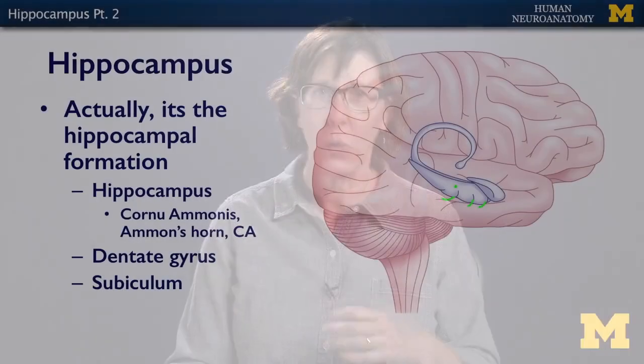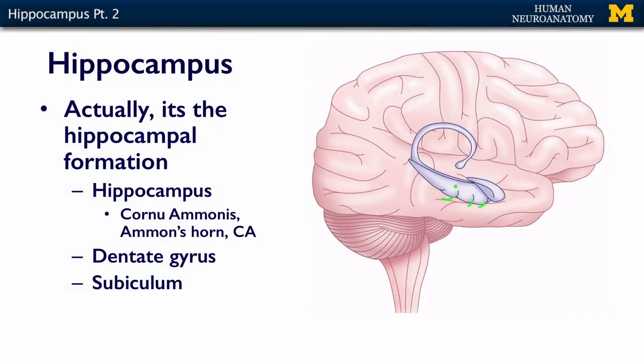The hippocampus itself has been called Cornu Ammonis, or Amon's horn. If you're ever reading papers about the hippocampus, you may see it referred to as CA, meaning Cornu Ammonis or Amon's horn. There are subdivisions even within the hippocampus — CA1, CA2, and CA3 — which have different synaptic connections.